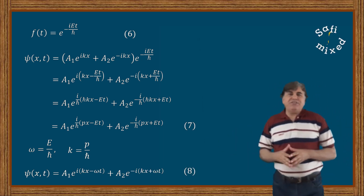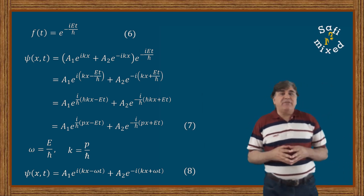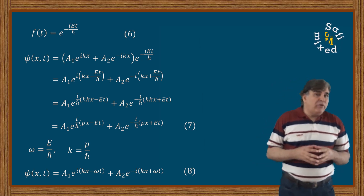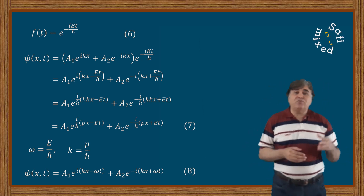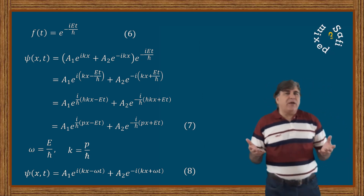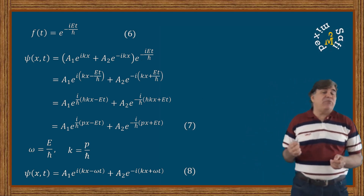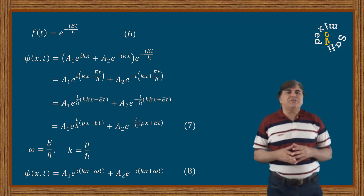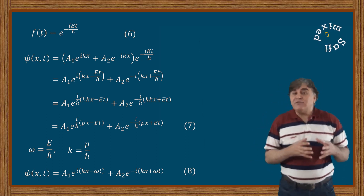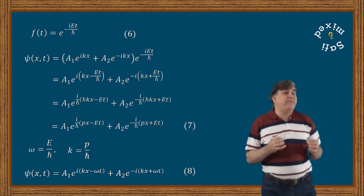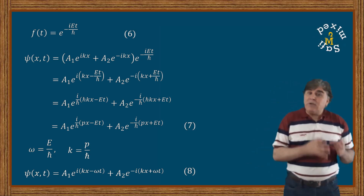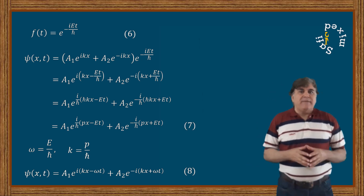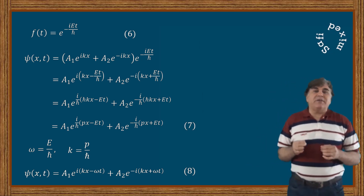Each term in the full wave function represents a traveling wave with angular frequency ω and wave vector k. The first term represents a wave moving to the right, and the second term a wave moving to the left. Since there are no boundary conditions, there is no restriction on k, and by equation three, no restriction on energy E. Therefore, the energy spectrum of a free particle in quantum mechanics is continuous.